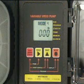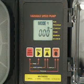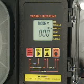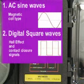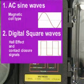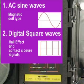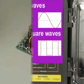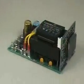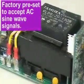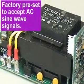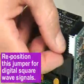When operating in mode number four, the pump's output speed will adjust automatically based on the frequency of a pulsed input signal. Two types of frequency input signals are acceptable: AC sine waves, such as magnetic coil type outputs, and digital square waves, such as hall effect signals and contact closures. A jumper plug, located on the circuit board, is factory preset to accept AC sine wave signals. This jumper must be repositioned when digital square wave signals are being used.